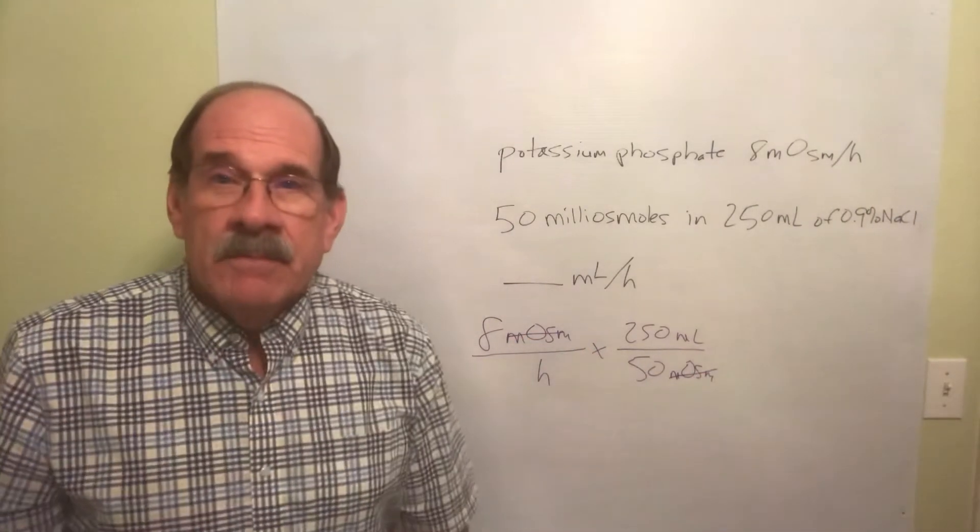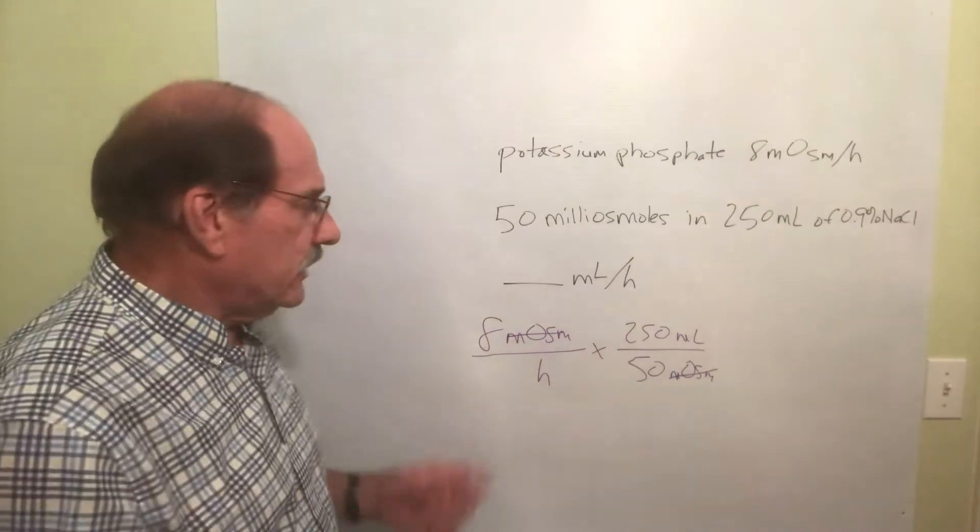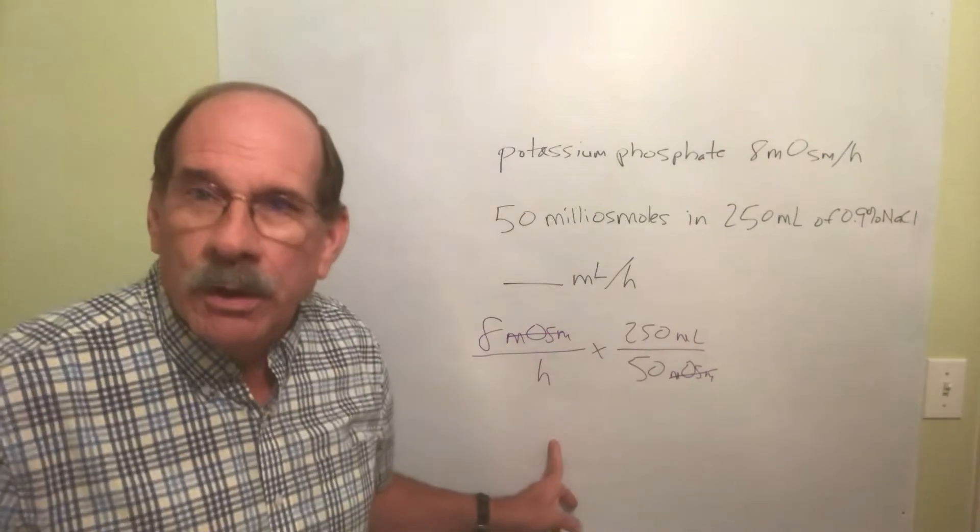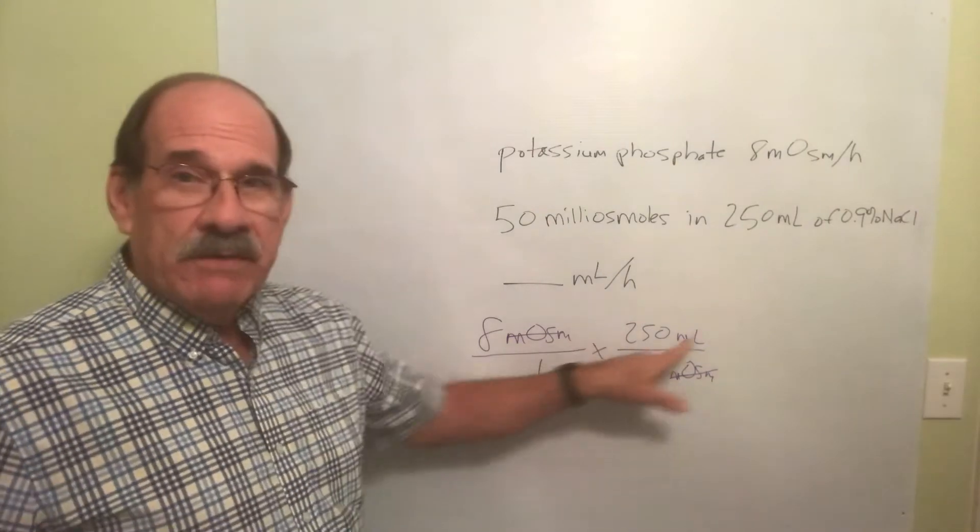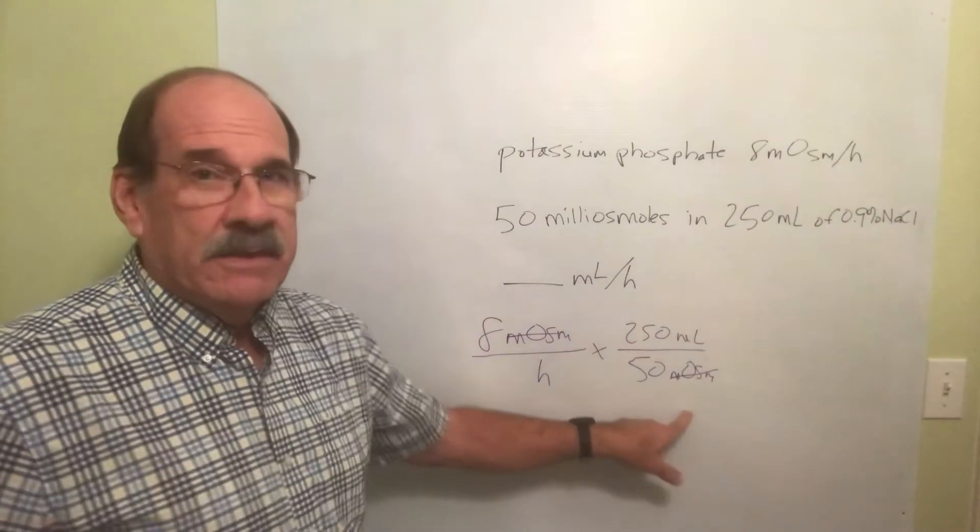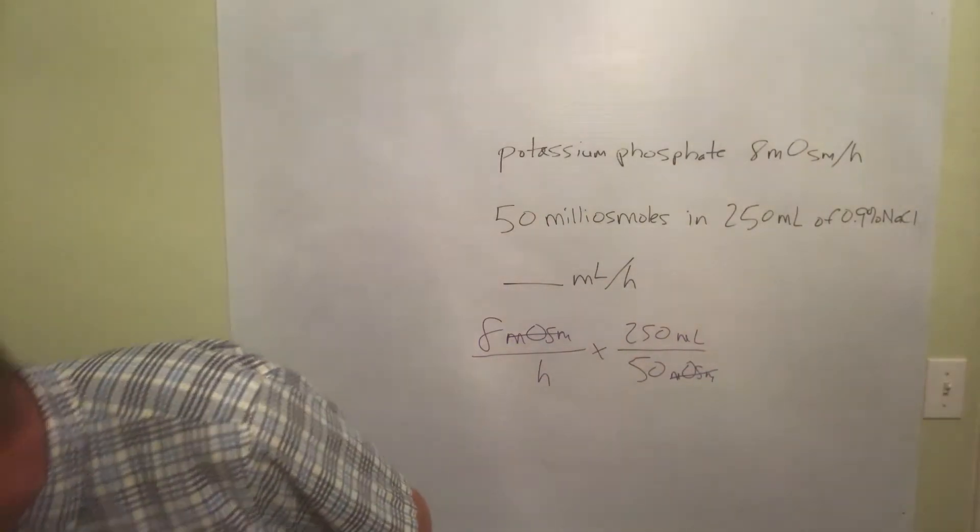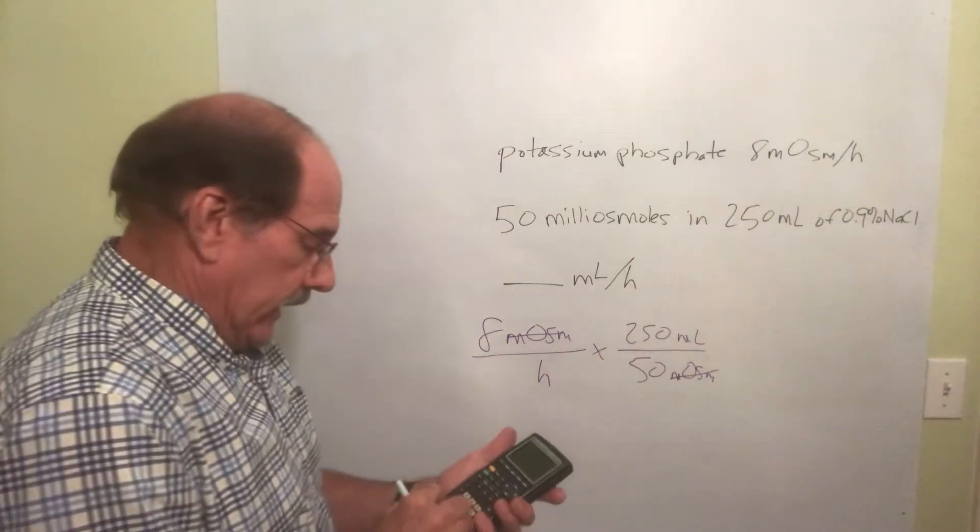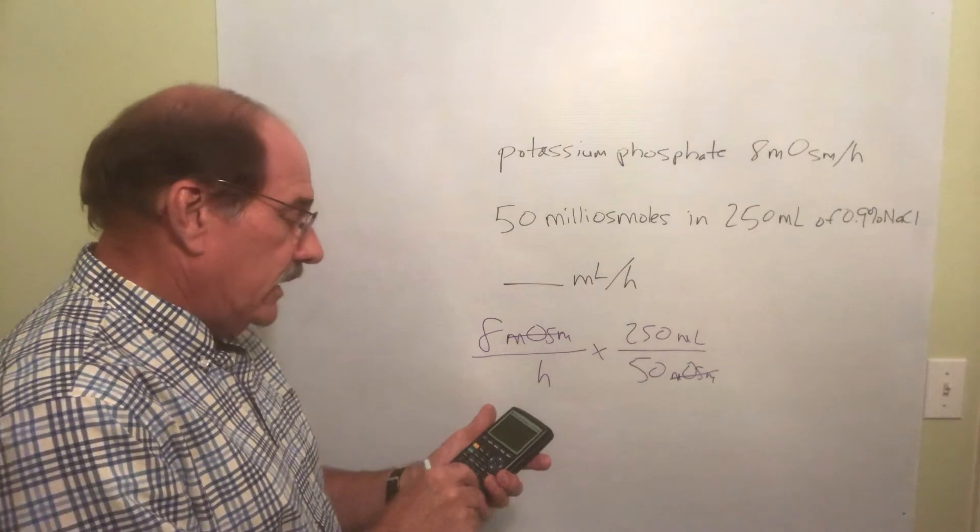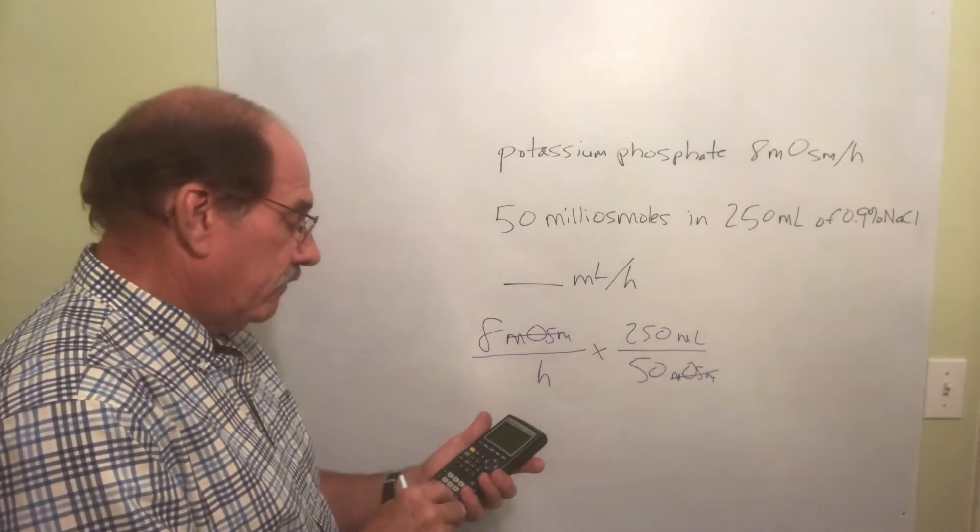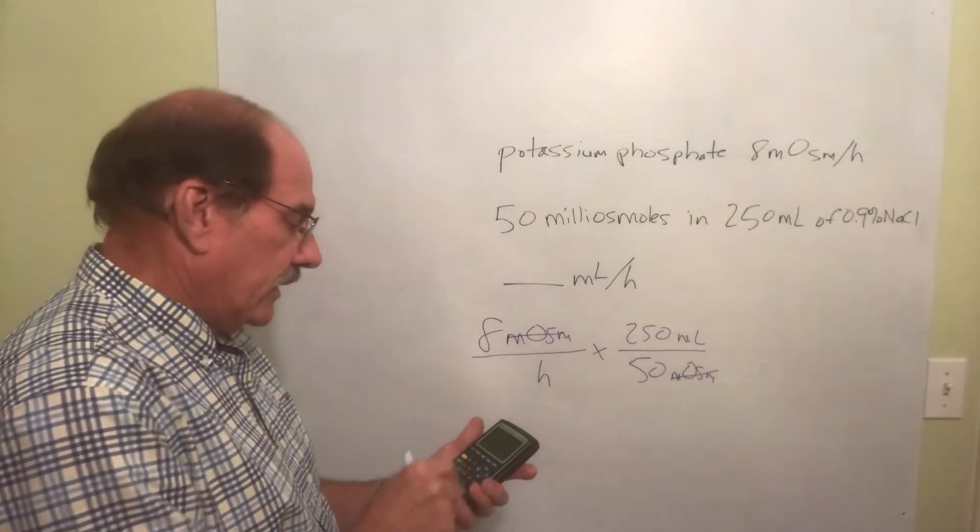And what cancels out? Those weird sapsuckers right there. The milliosmoles cancel and what's left? Milliliters per hour. What's my math? Eight times 250 divided by 50. Now you can do that: eight times 250 then divided by 50, and the answer is - I did it wrong.